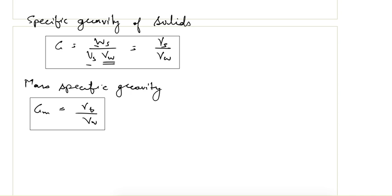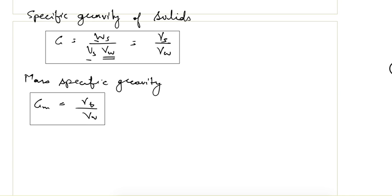Now we will see some important relationships derived using a phase diagram and between the parameters we covered. The first is the relationship between water content, weight of solids, and total weight.